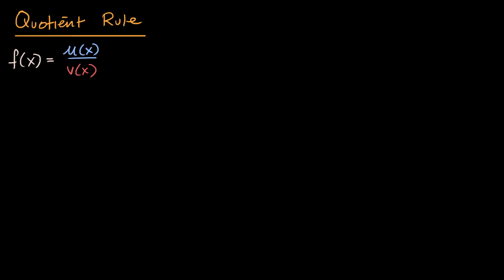Then the quotient rule tells us that f'(x) is going to be equal to - and this is going to look a little bit complicated, but once we apply it, you'll hopefully get more comfortable with it - the derivative of the numerator function, u'(x), times the denominator function, v(x).